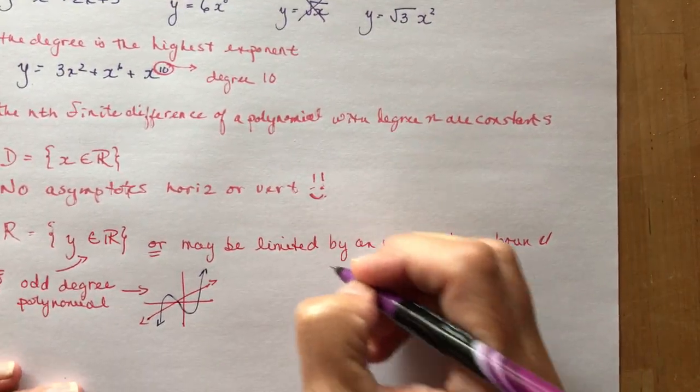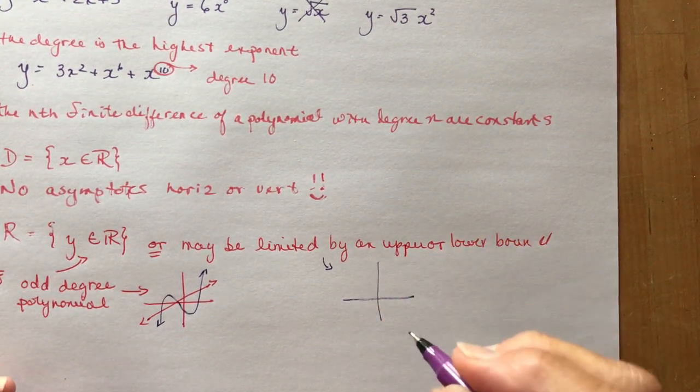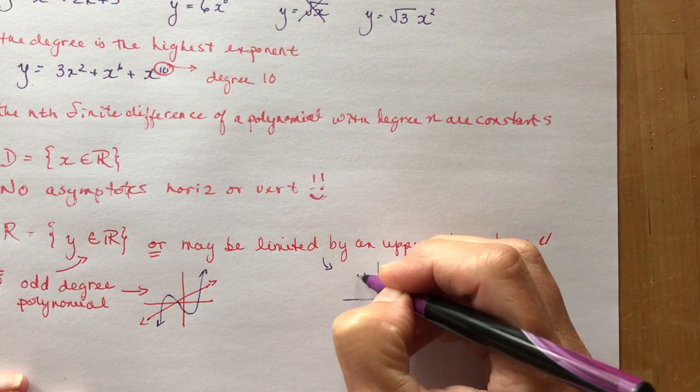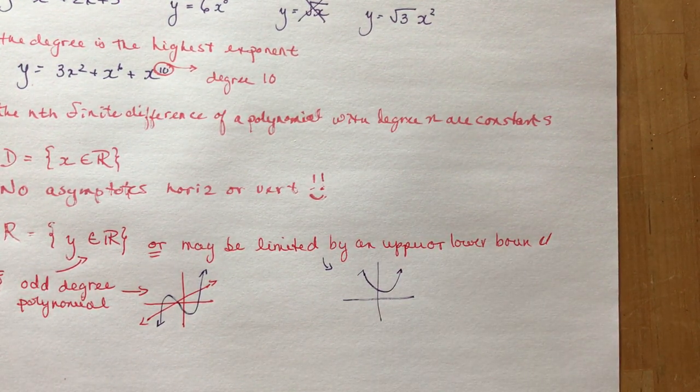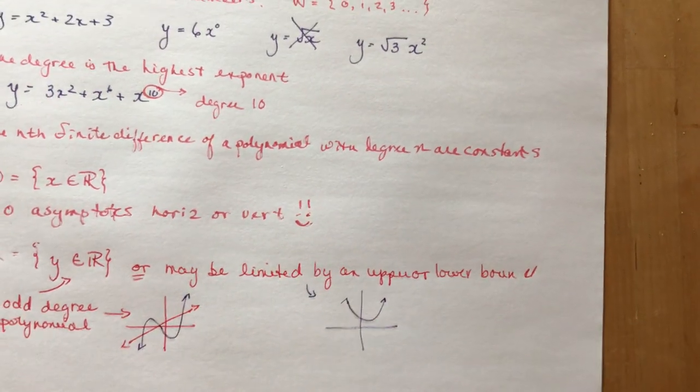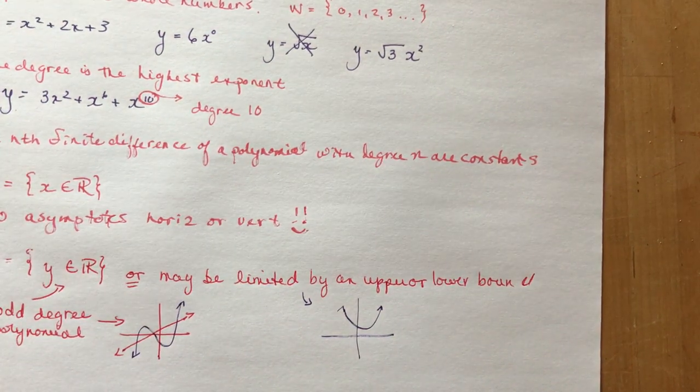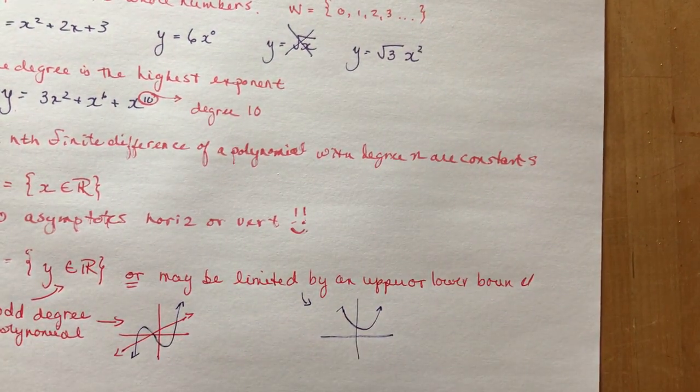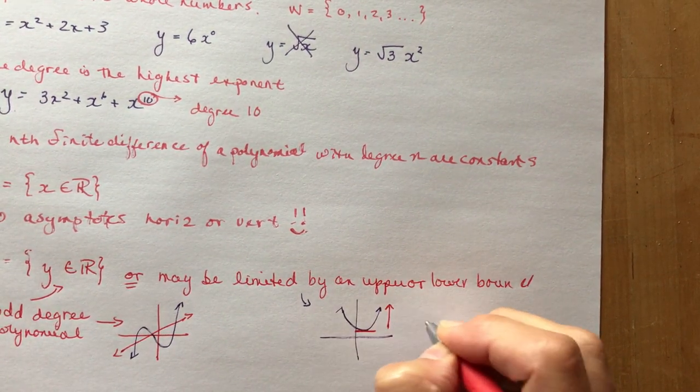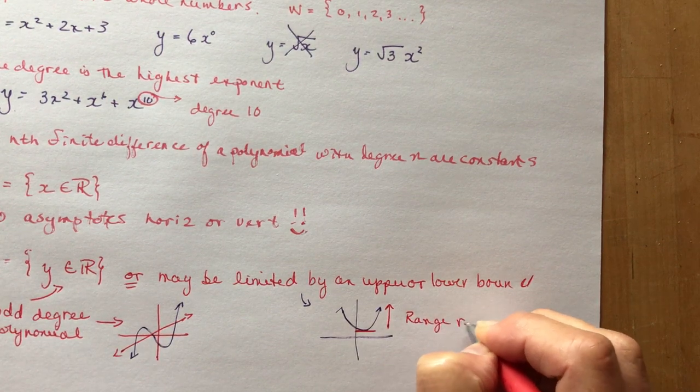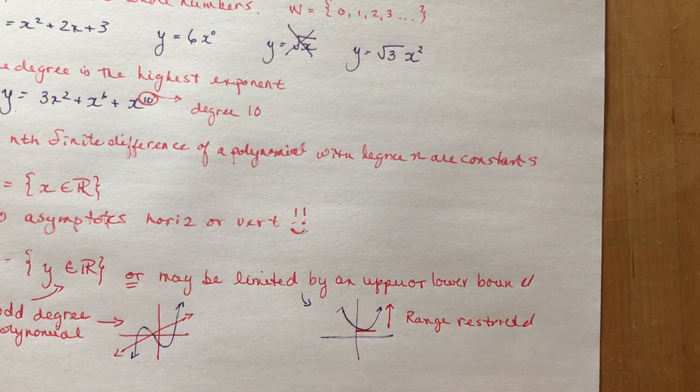But if you have a limited one, that would mean something like this. Let's say I have a parabola like this. If I have a parabola, then it's going to have a minimum value. Now we have a minimum value. That's going to restrict our range. The range is going to be from here up. Range restricted. The range was restricted by this lower bound. Or it could be going upside down as well.